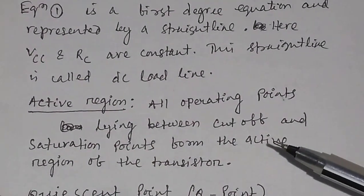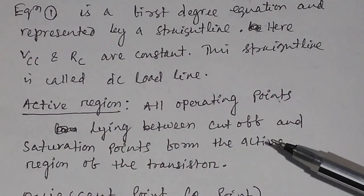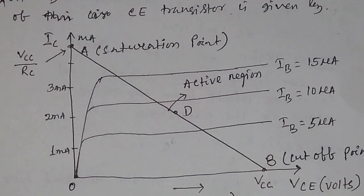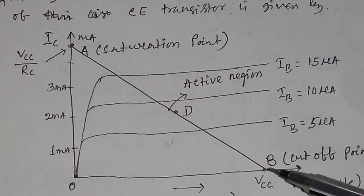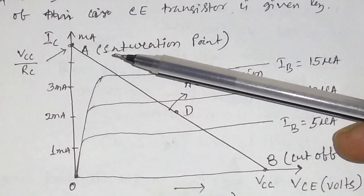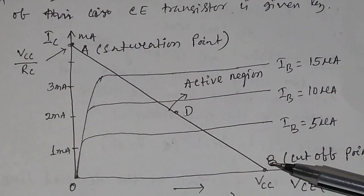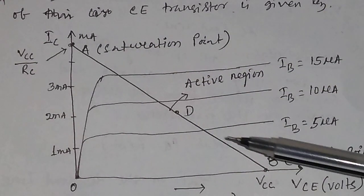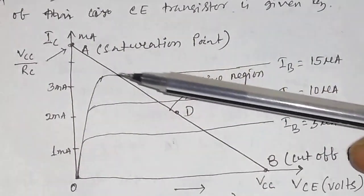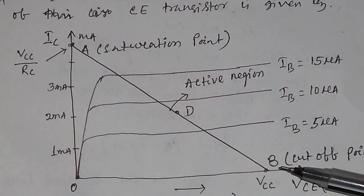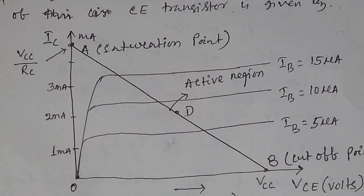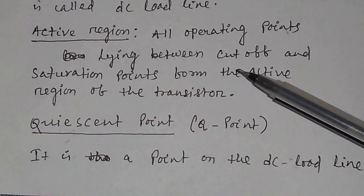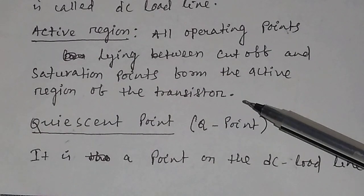What is the active region? All operating points lying between the cutoff and saturation points form the active region of the transistor. In between points B and A — the cutoff point and the saturation point — all points lying along the whole of this line form your active region.